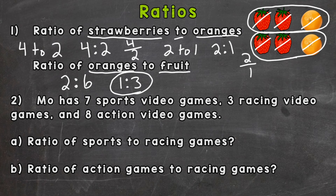So that's a part-to-whole ratio. The first part of number one — strawberries to oranges — was a part-to-part ratio, because strawberries are one part of the group compared to oranges, which is another part of the group.